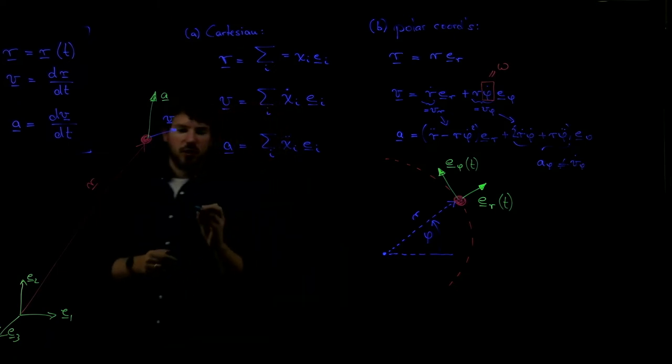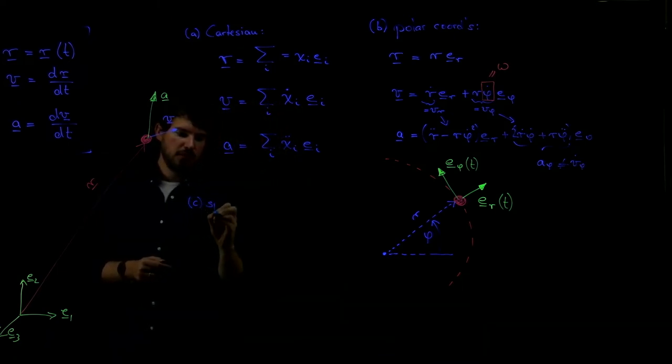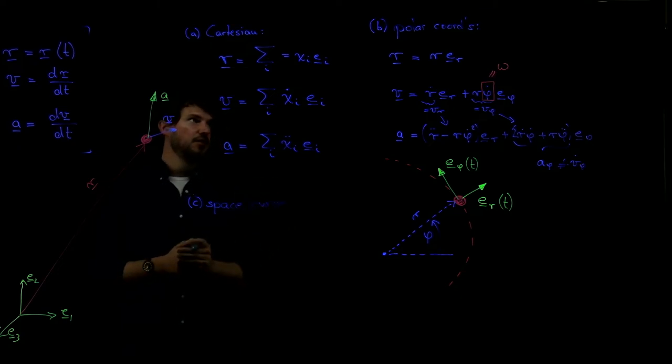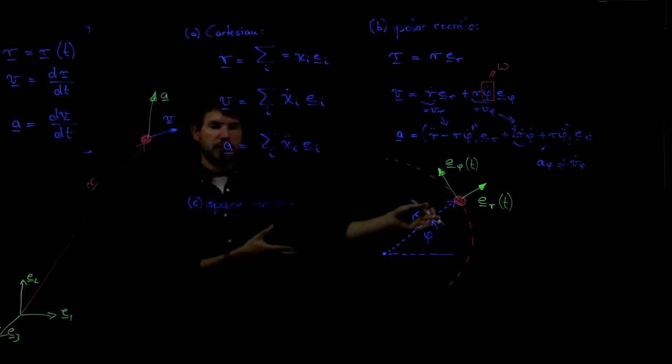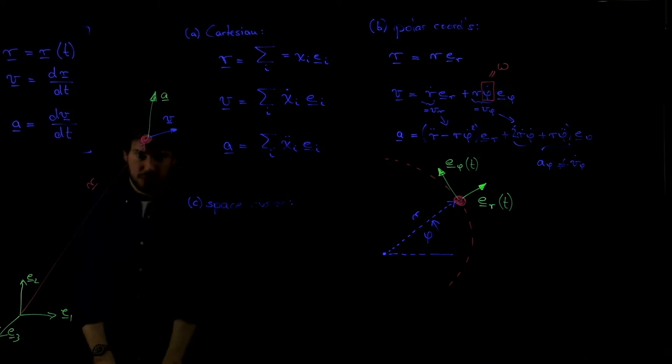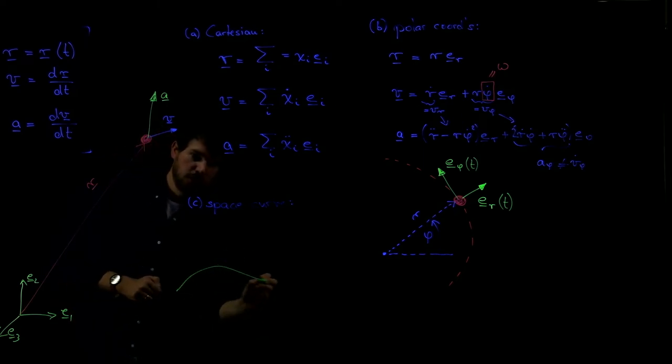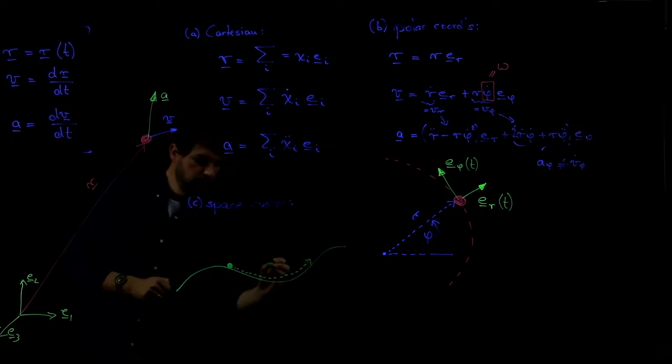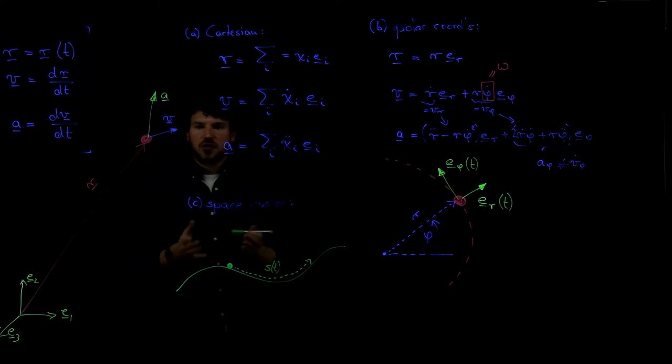The third and last one I quickly want to show you is the space curve description. This one is most convenient if a particle is not moving on a circular path, but on some other given path. For example, let's say a particle is moving on a certain track. This is the particle that is moving along.